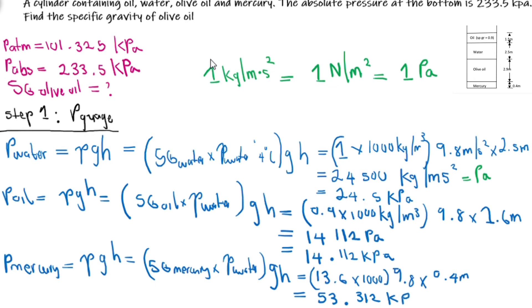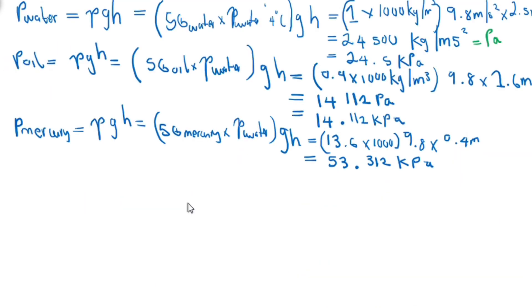Step two is to now use the absolute pressure formula. Pressure absolute, which is the pressure total at the bottom of our tank, is the atmospheric pressure plus the pressure of the components that we have here: gauge water plus gauge oil plus gauge mercury plus gauge olive oil.